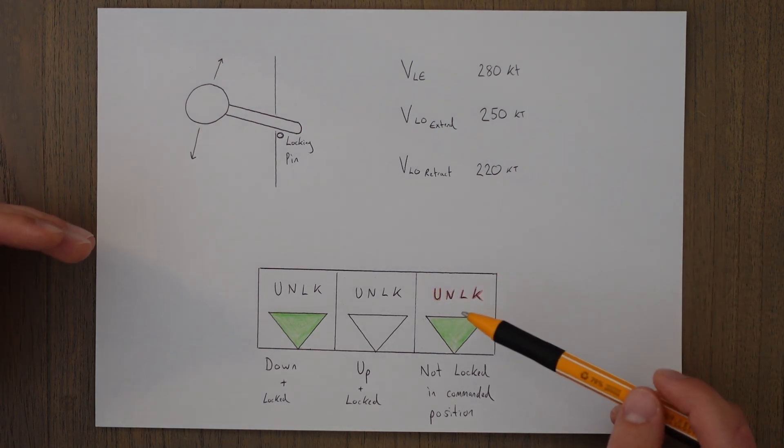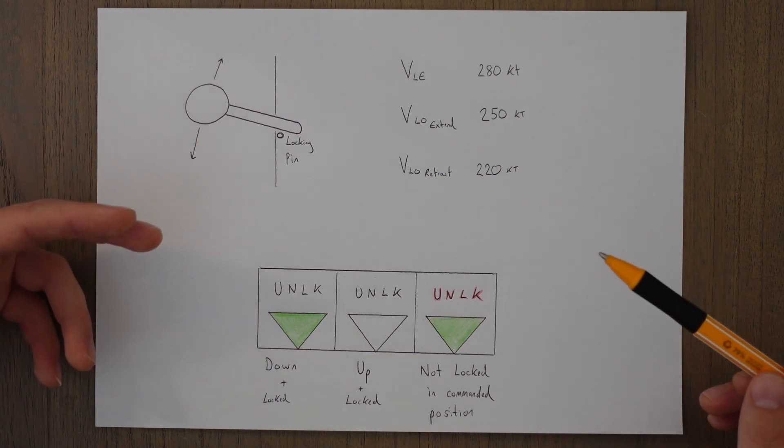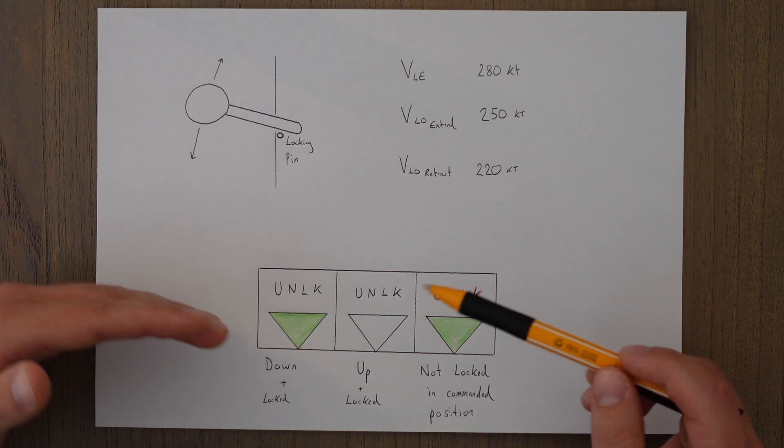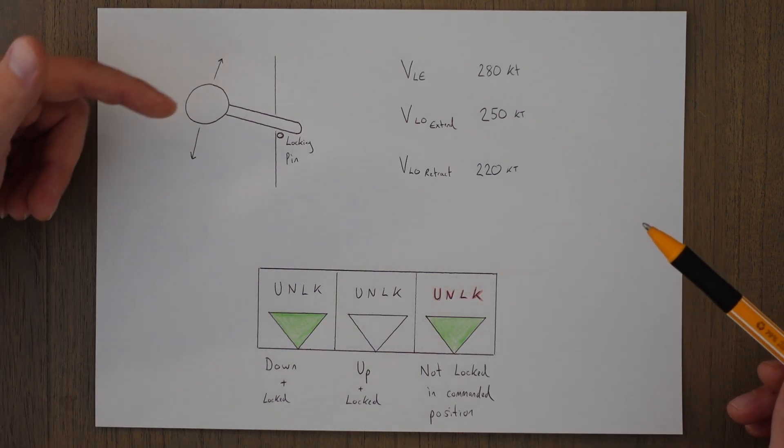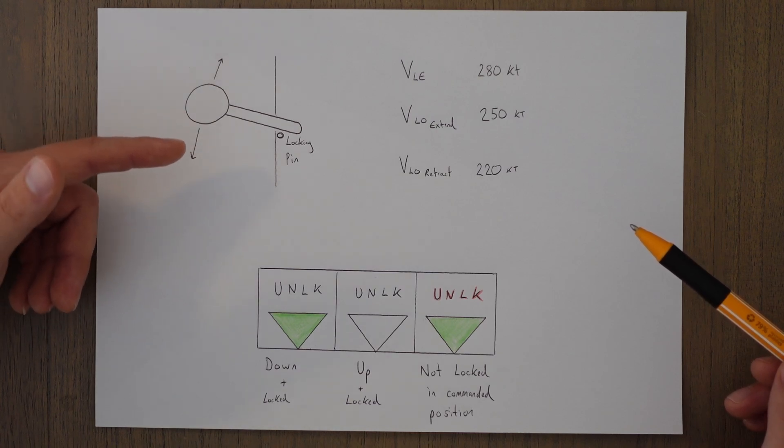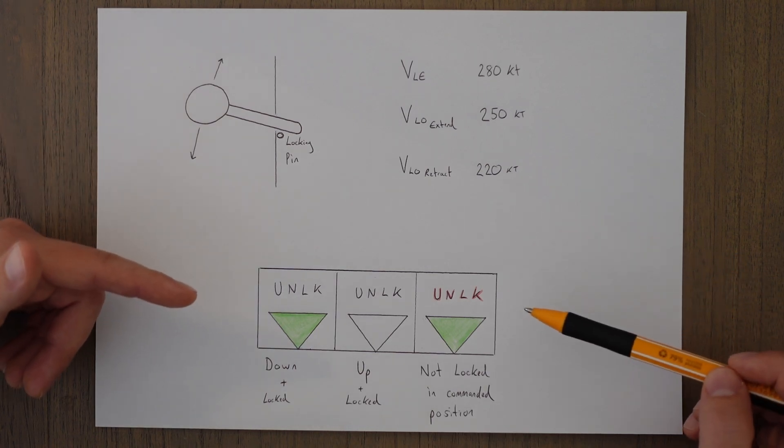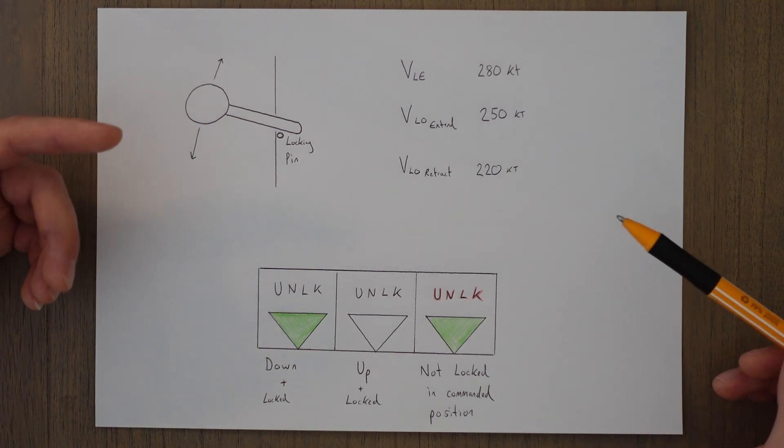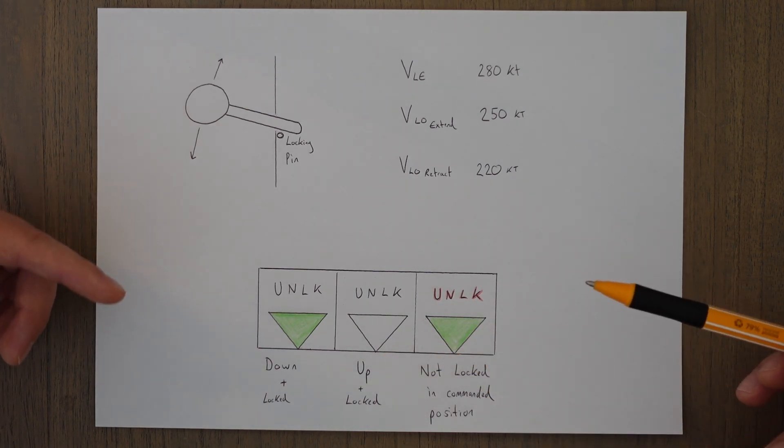Another thing to note about these lights is that the red lights almost act like an in-transit indicator. When we lower the gear on approach, the red lights will come on at first because we've told the aircraft we want the gear down—the lever is at the bottom position—but they don't happen instantaneously, so the landing gear wouldn't be locked; therefore the red lights would come on. It would only be once it is fully extended and locked that the green lights come on and the red lights go out.